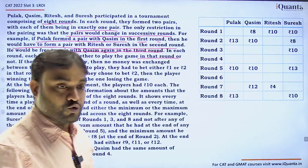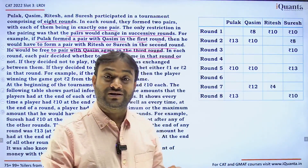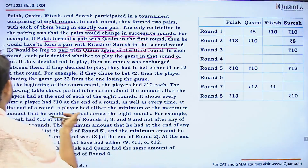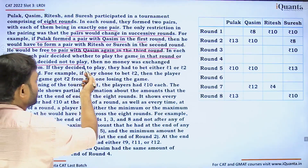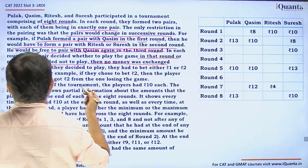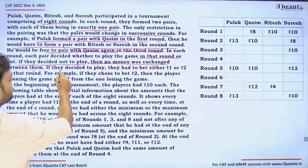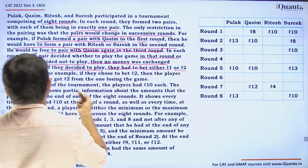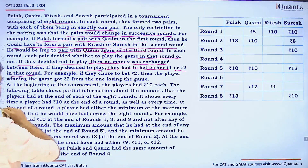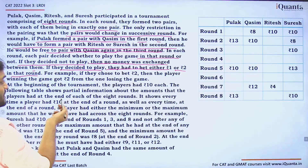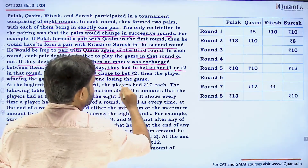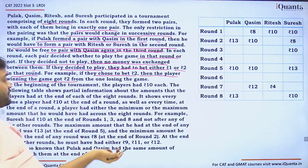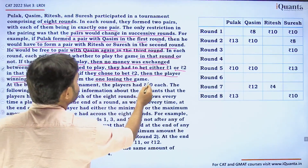In each round, each pair decided whether to play the game or not. If they decided not to play, no money was exchanged between them. If they decided to play, they had to bet either one rupee or two rupees. For example, if they chose to bet two rupees, the player winning the game got two rupees from the one losing.